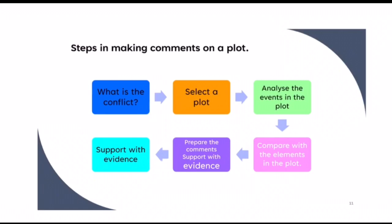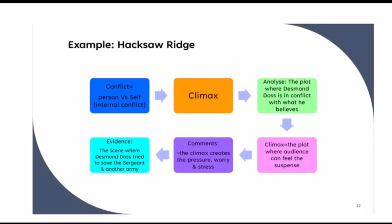I hope that you are ready to make comments on a plot. Let's discuss one example on how to make comments on a plot. I will use the movie Hacksaw Ridge, since I feel the movie is interesting and the plots are easy to follow. The first step is to identify the conflict. In Hacksaw Ridge, the main conflict is the internal conflict faced by the protagonist named Desmond. Therefore, the conflict identified is person versus self.